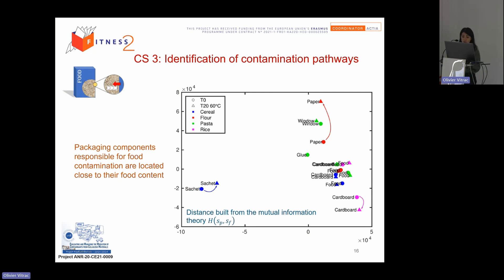And here we try, we make some test on dried food, cereal, flour, pasta, and rice. We have two conditions of contact. T0 when we buy it, when we bought the food product. And after the migrations, accelerate migration at 60 degrees Celsius for after 20 days.